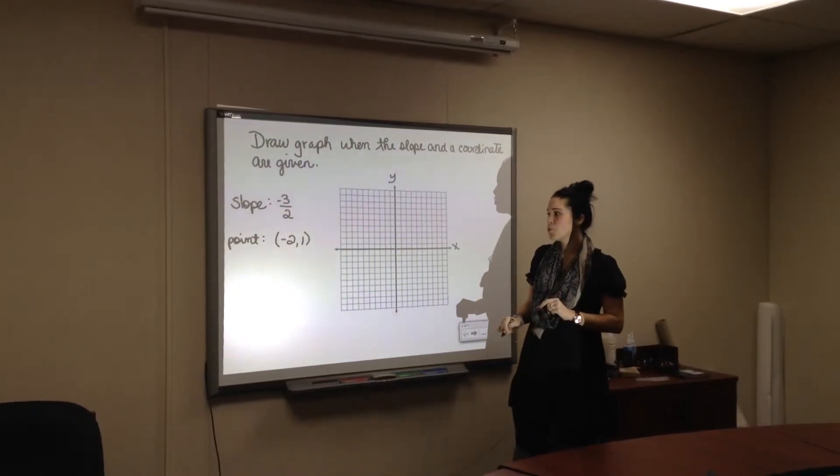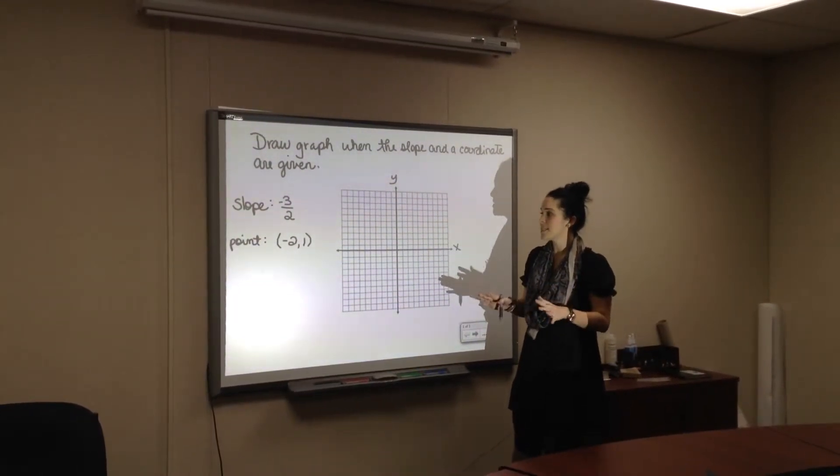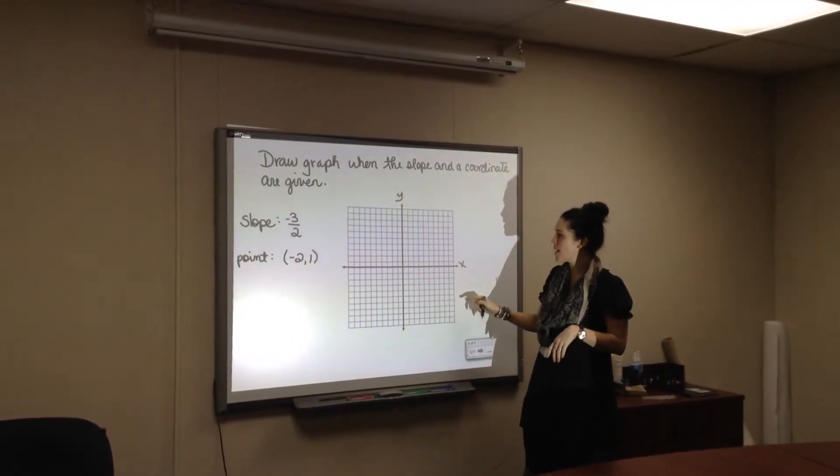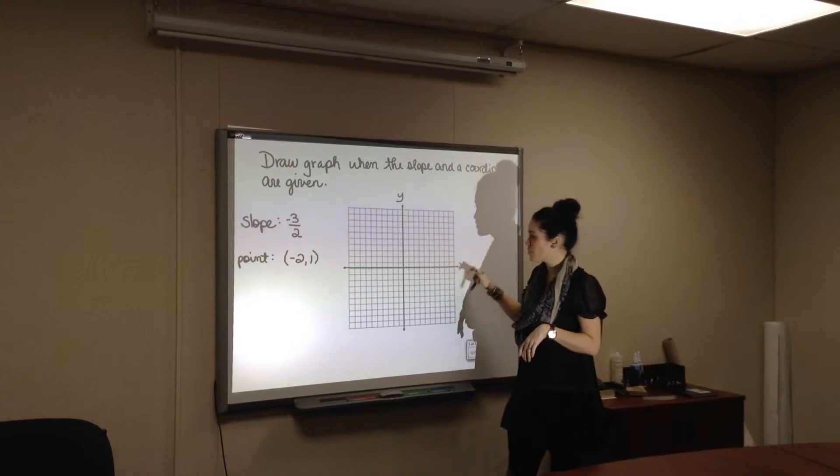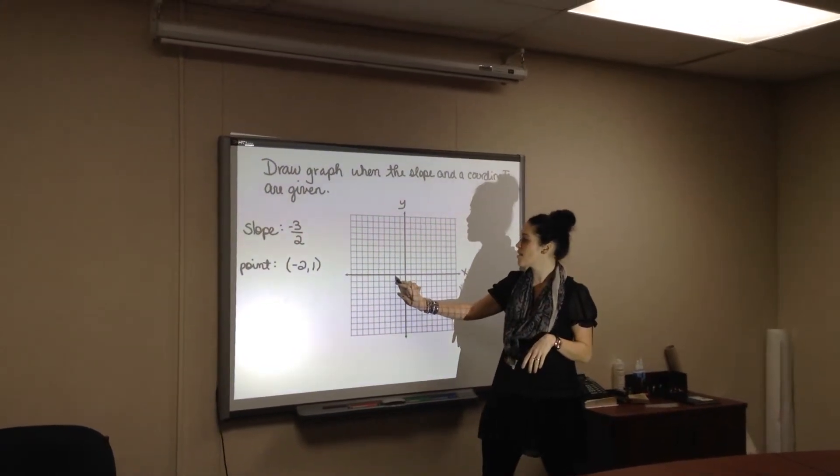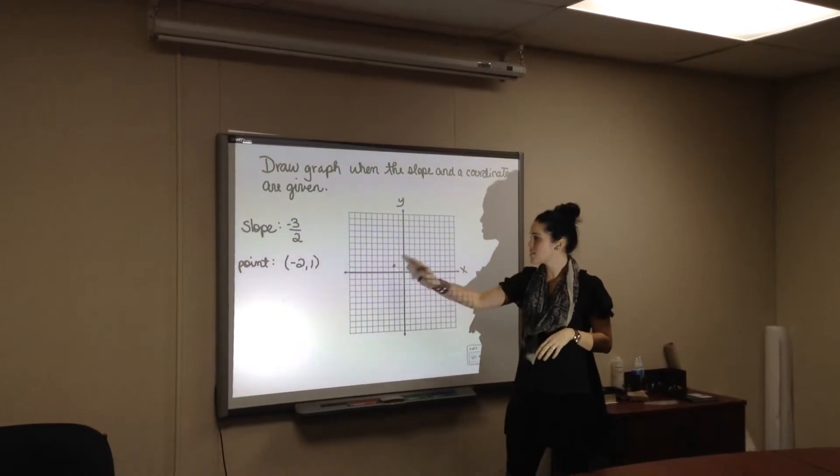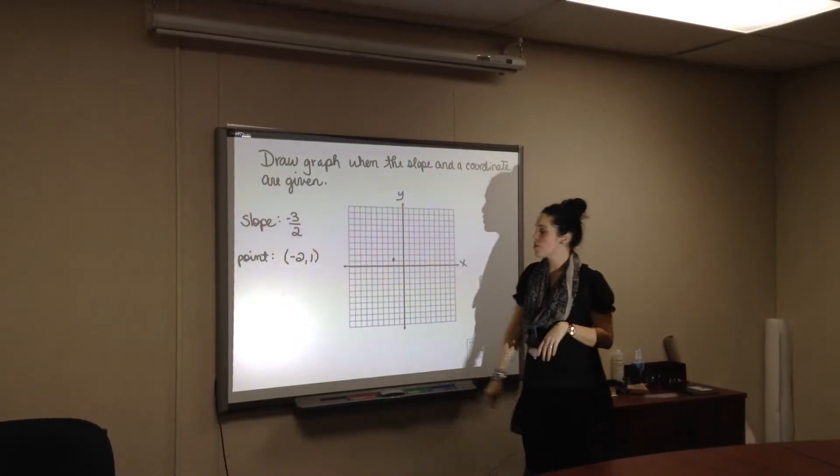All right, so your first point is minus two, one. We've already kind of seen how to put a coordinate on a graph, but just a quick reminder the x-axis is first, and so we get to minus two, and then we go up to one on the y-axis, so this is our coordinate that your teacher gave you.